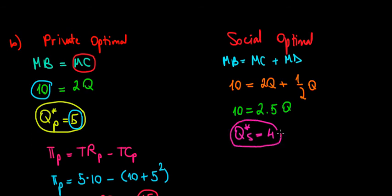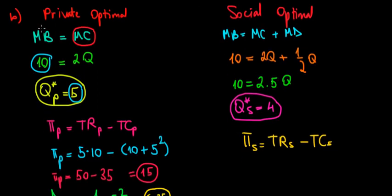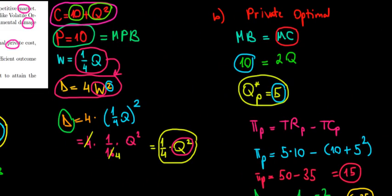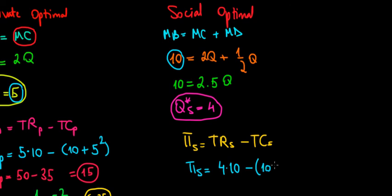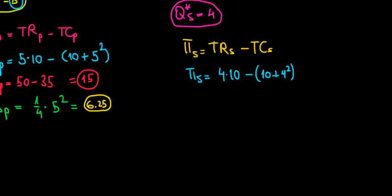Now we need the profit under the social optimal — total revenue minus total cost. We're selling 4 units at $10 each, so 4×10 = 40. The total cost function is 10 + Q², so that's 10 + 4² = 10 + 16 = 26. Therefore, profit equals 40 − 26 = 14.